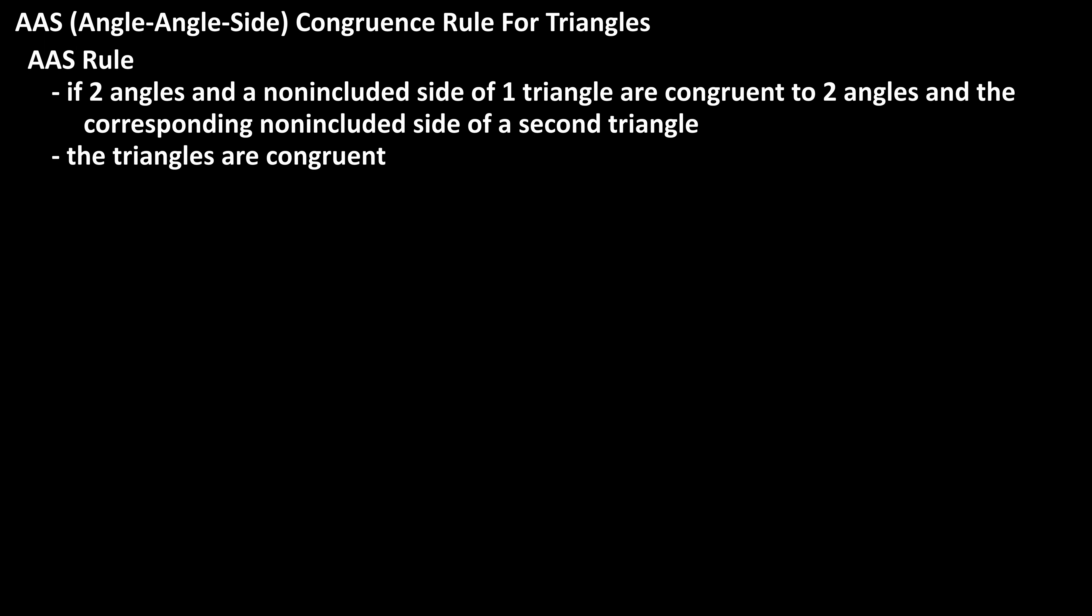The AAS, or angle-angle-side congruency rule of triangles, is if two angles and a non-included side of one triangle are congruent to two angles and the corresponding non-included side of a second triangle, then the triangles are congruent.